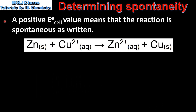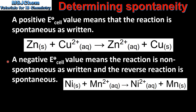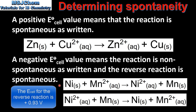To summarize: a positive cell potential value means that the reaction is spontaneous as written. So for this reaction we got a positive value for the cell potential, therefore it's spontaneous as written. A negative cell potential value means the reaction is non-spontaneous as written and the reverse reaction is spontaneous. So for this reaction we got a negative cell potential. If we calculated the cell potential for the reverse reaction, we'd get a positive cell potential, meaning that the reverse reaction is spontaneous.